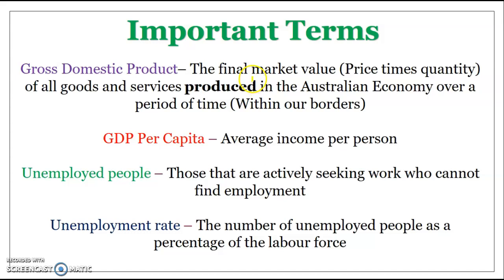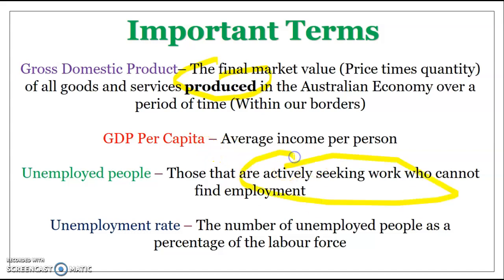GDP refers to total output produced in the economy. Income per person is GDP per capita. Unemployed people are those actively seeking work who can't find work, and the unemployment rate is the number of unemployed people as a percentage of the labour force — that is, all people who are employed plus unemployed.